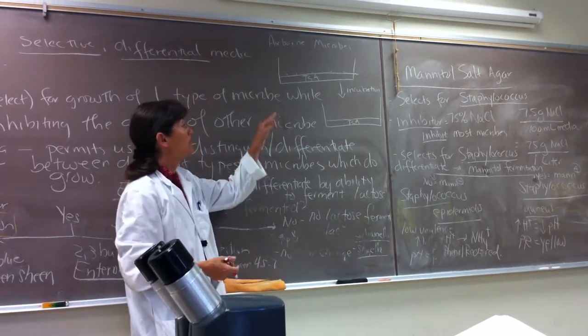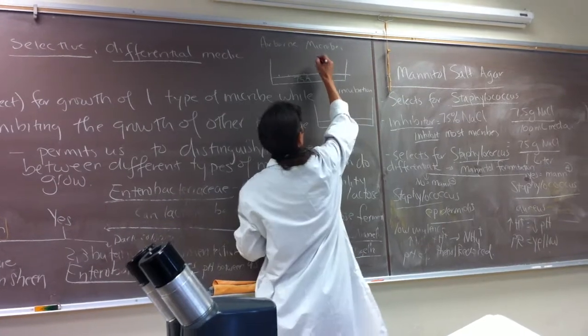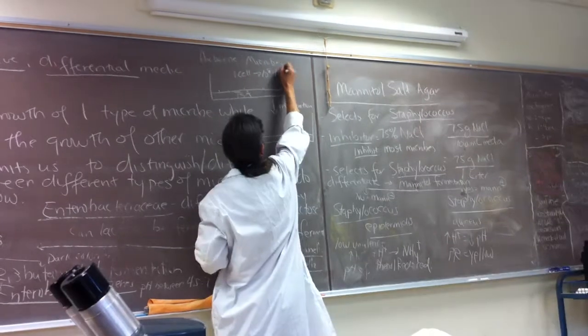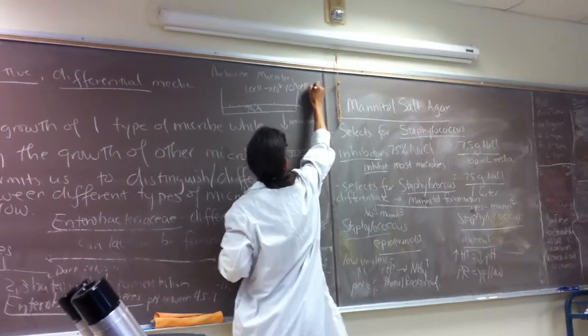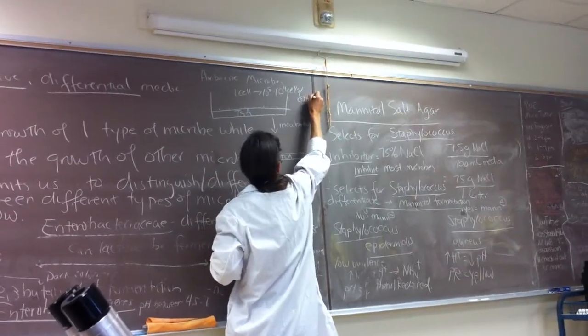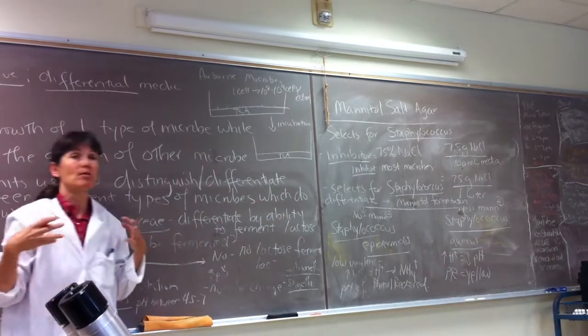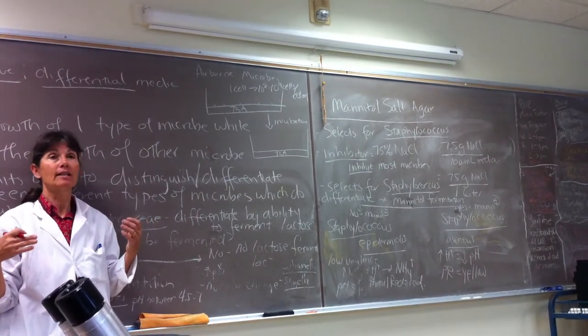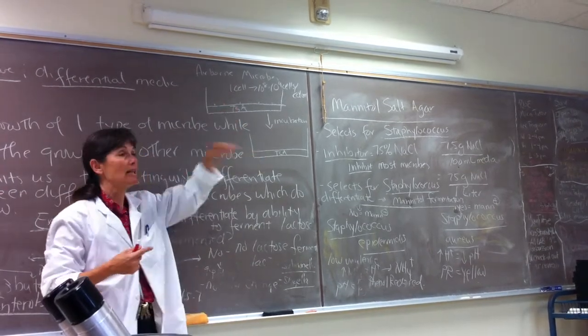So we can go from, for example, from one cell to 10 to the 8th to 10 to the 9th cells in one of those colonies. And again, we think of all the members of the colonies being genetic clones of one another, they all descended from the same initial microbe that landed on the plate.